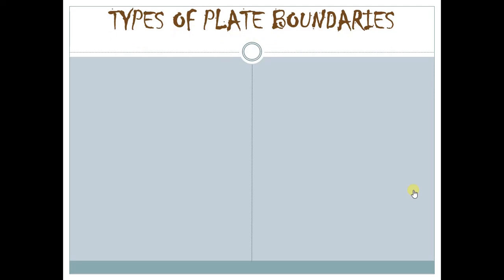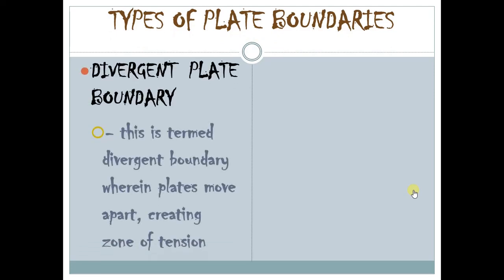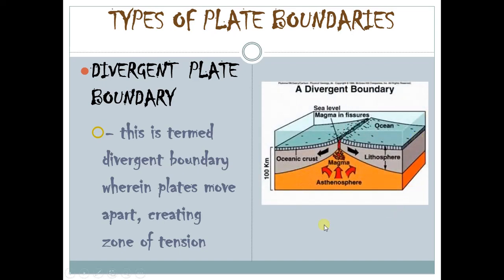There are actually three types of plate boundaries. The first type is what we call the divergent plate boundary. From the term itself, divergent means that the plates are moving apart or they are drifting away from each other, thus creating a zone of tension. As we can see in the picture, when these two plates move away from each other, it creates a crack at the middle wherein the magma would come out, eventually creating what we call mid-ocean ridges, or we could also have rift valleys just like in Iceland.